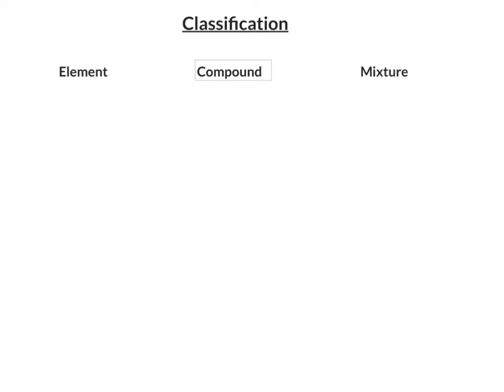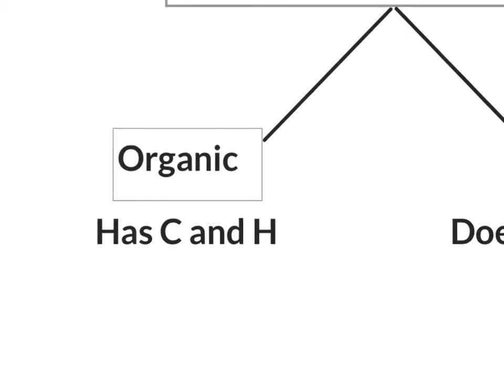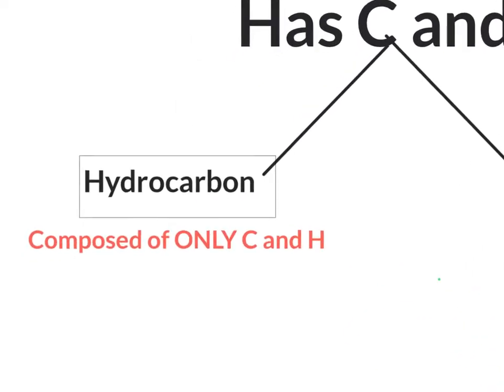We've already learned our first step of classification, which is to identify the compound as an organic chemical — that means it has carbon and hydrogen at a minimum. Our next step of classification will be to separate it into hydrocarbon, which are compounds that have only hydrogen and carbon, and functionalized organic compounds. Those are compounds that have other elements present like halogens, oxygen, sulfur, or nitrogen. For the moment, we will only focus on the hydrocarbons.